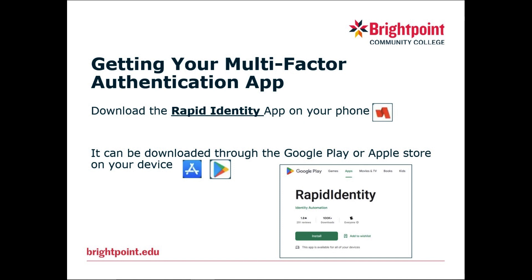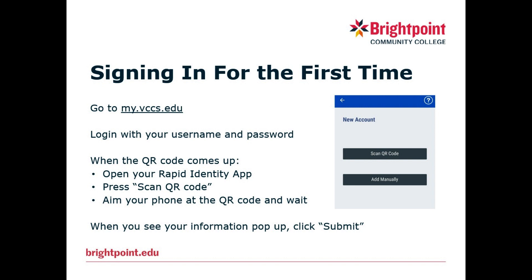Once you have it downloaded, you can go to my.bccs.edu and log in with your username and password. If this is your first time logging in, you should see a QR code pop up on the screen. What you want to do now is open your Rapid Identity app, click on Scan QR Code, and then aim your phone at the screen and wait for the code to be scanned. After it's scanned, you should see your student information pop up inside the app. If it's correct, click Submit.